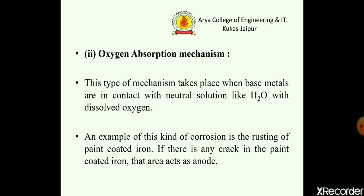The second is the oxygen absorption mechanism. This mechanism takes place when the base metals are in contact with a neutral solution like H2O with dissolved oxygen. An example of this kind of corrosion is the rusting of iron. If there is any crack in the paint-coated iron, that area acts as the anode.